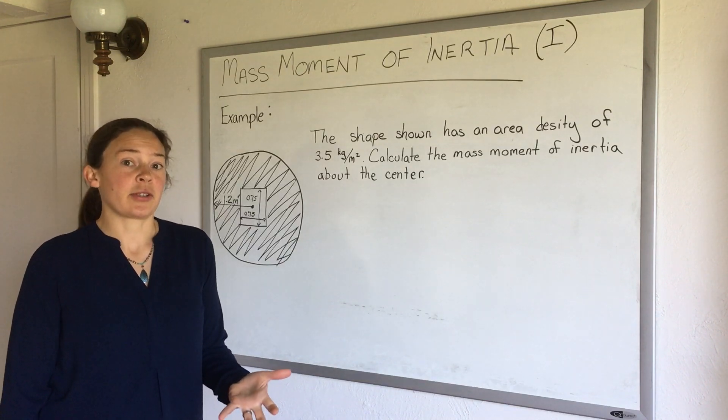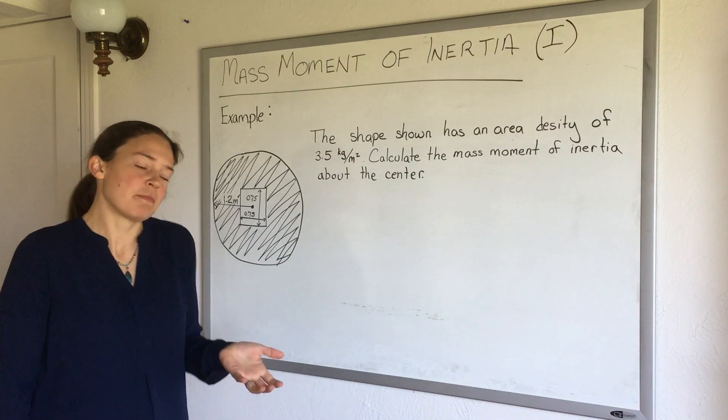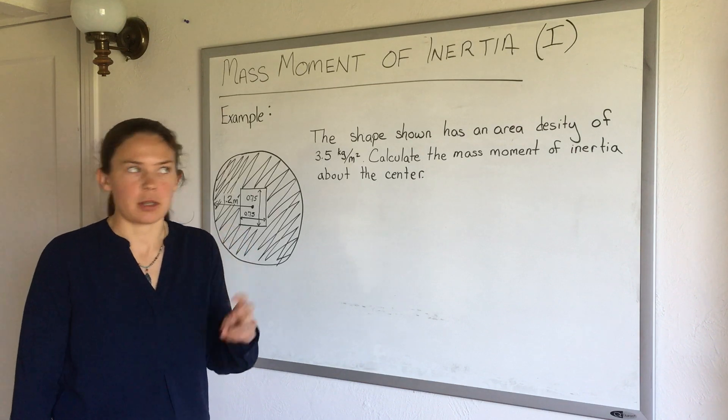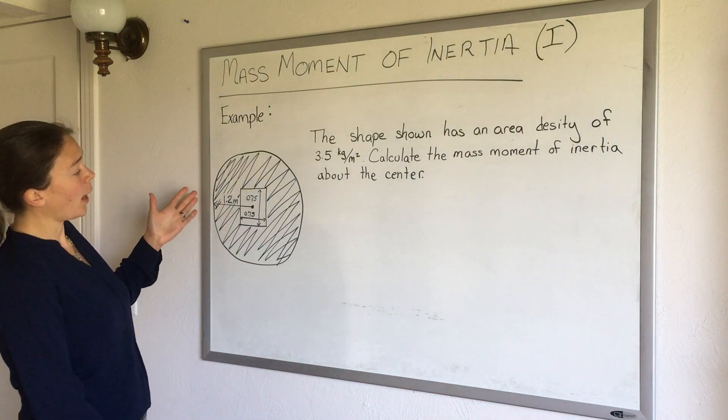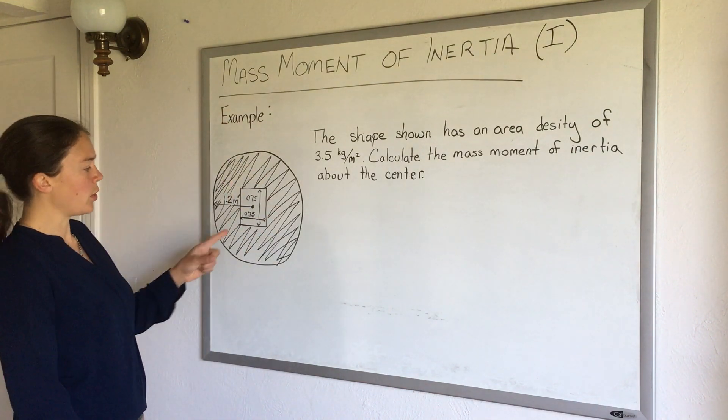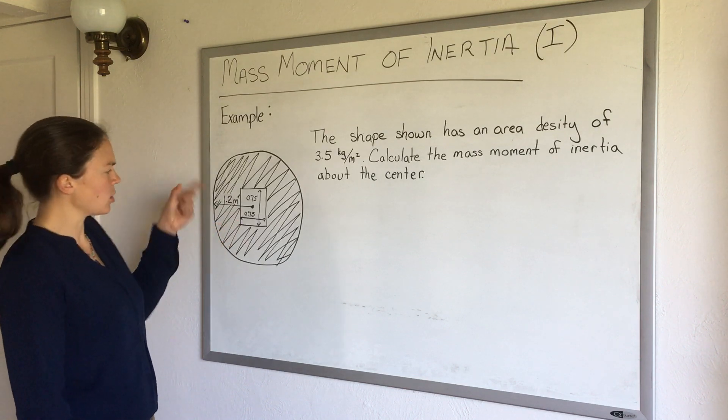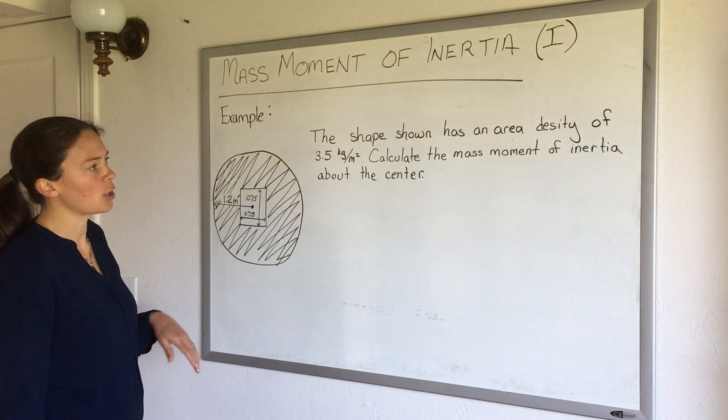Now let's talk about calculating mass moments of inertia for somewhat funny shapes. So for example here I have a shape of a circle with a square missing in the middle, and it's probably got some depth but we'll assume it's uniform in that direction.